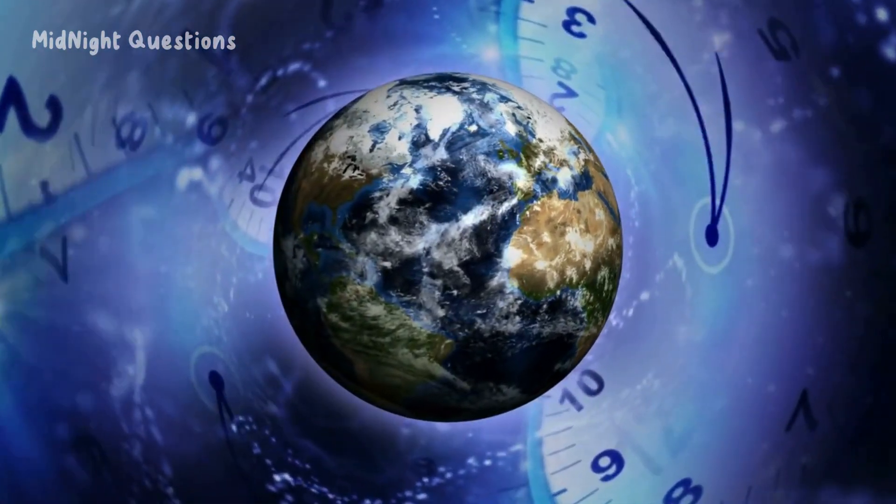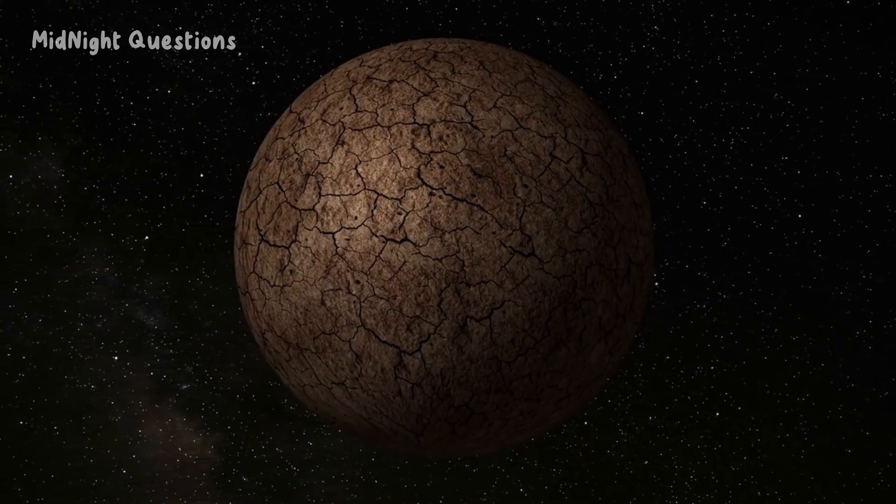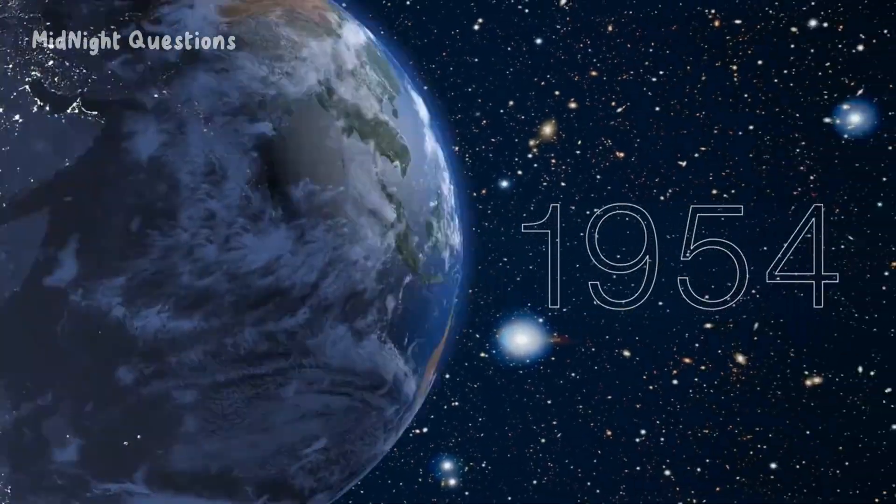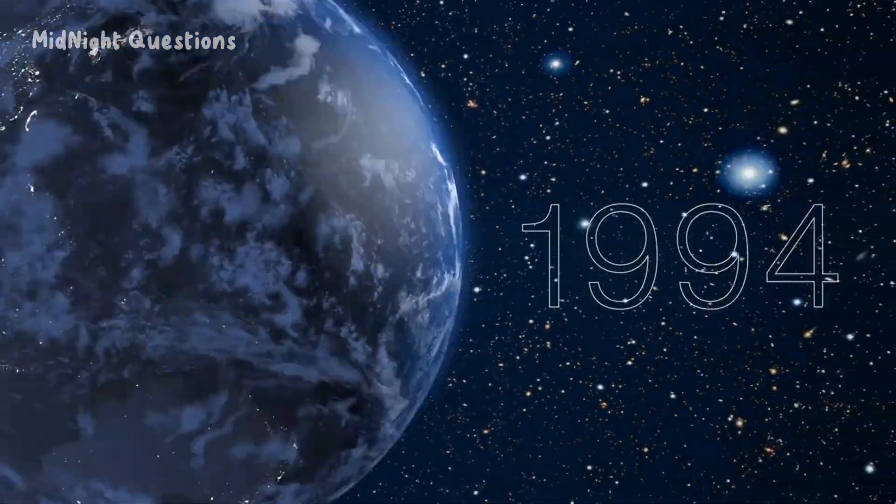The Earth 1 billion years ago was a vastly different place than what we know today. It was a time when the Earth was still in the process of forming into the planet that we know today. The continents were in different positions and the landmasses looked vastly different from what we see now.